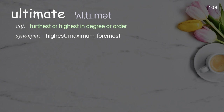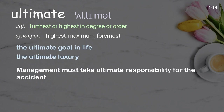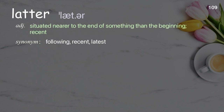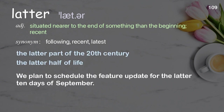Ultimate: farthest or highest in degree or order. Examples: the ultimate goal in life, the ultimate luxury. Management must take ultimate responsibility for the accident. Latter: situated nearer to the end of something than the beginning; recent. Examples: the latter part of the 20th century, the latter half of life. We plan to schedule the feature update for the latter 10 days of September.